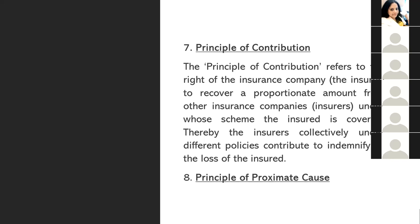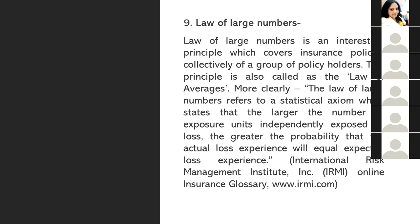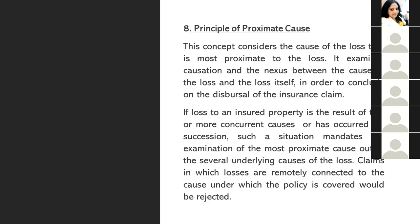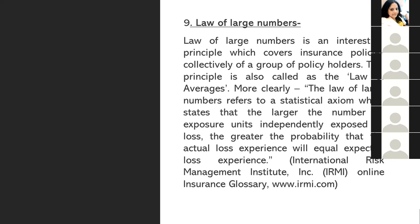The principle of proximate cause — the proximate cause is the closest cause, that is, causation. If the insured object experiences an accident, the insurance company will try to find out the main cause of the accident and from there determine the number of claims received by the policyholder.